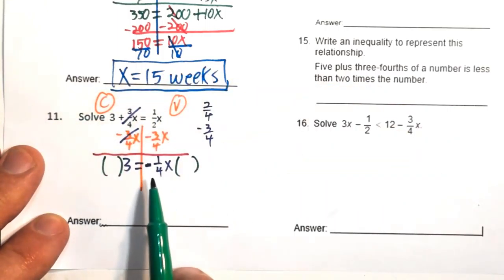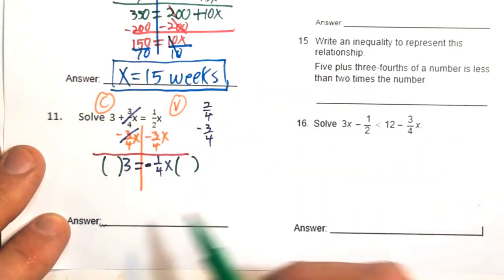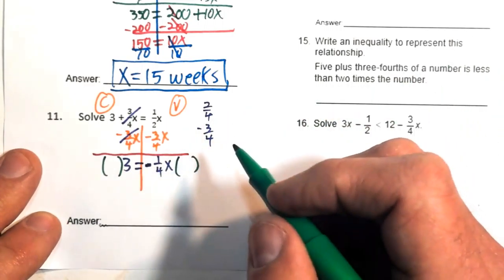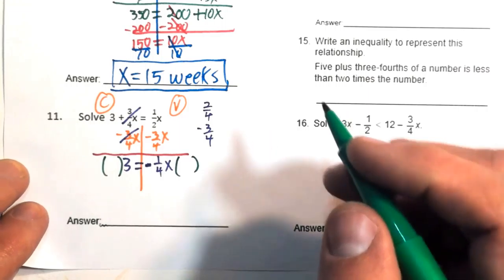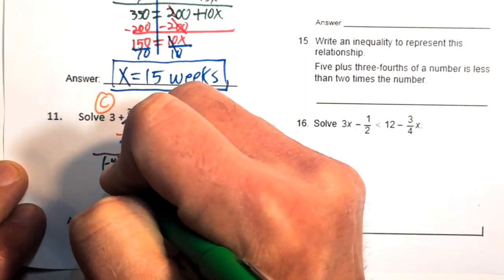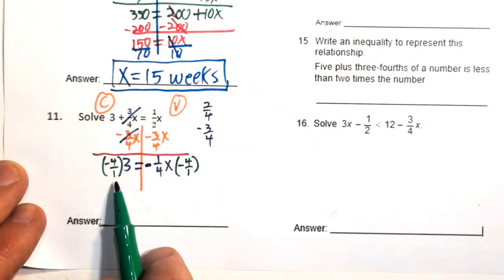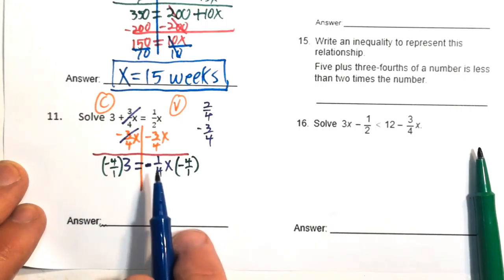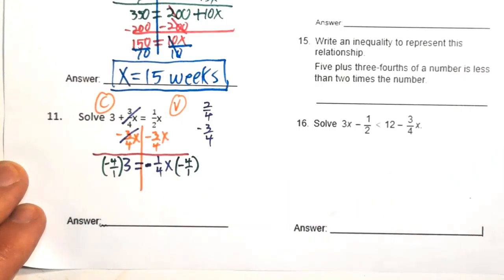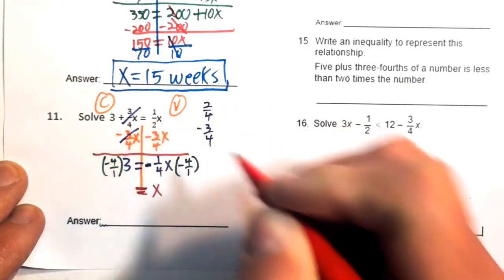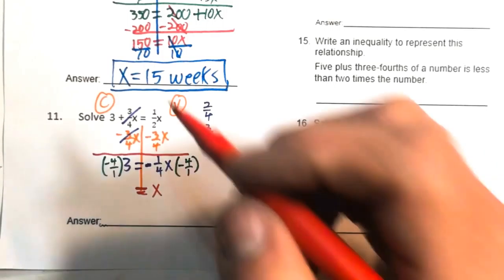To isolate x, multiply both sides by the reciprocal of negative one-fourth, which is negative four over one. Negative times negative is positive; one-fourth times four over one gives four-fourths, which is 1. So 1 times x equals x — the variable is isolated.